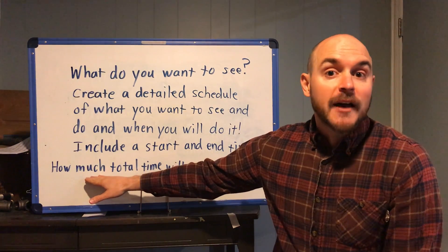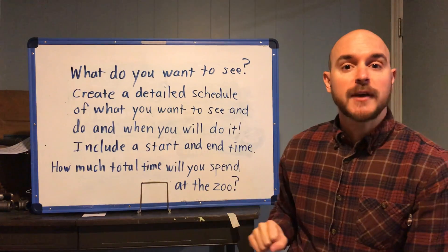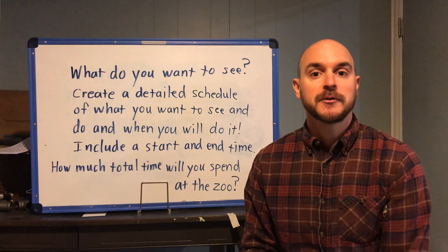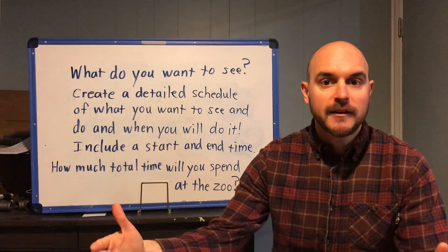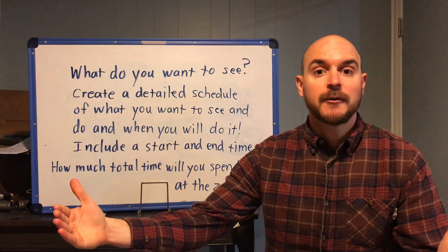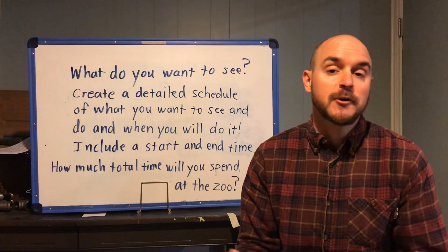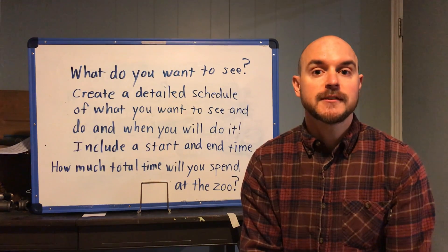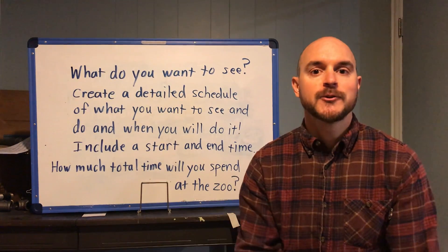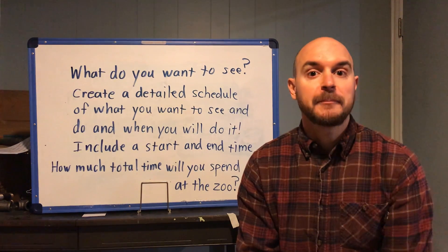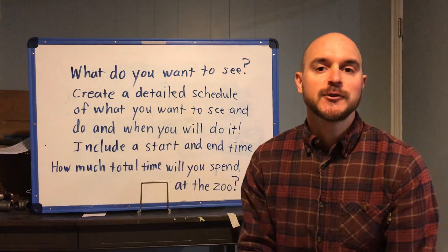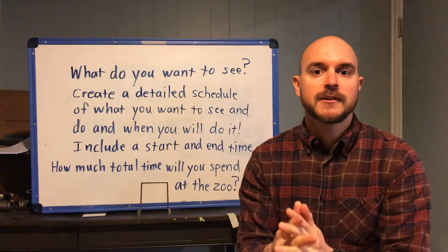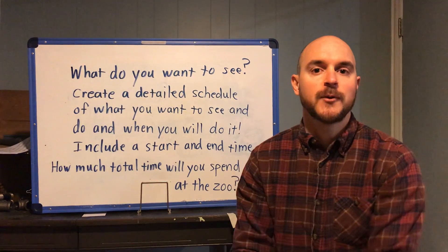Once you have your schedule created, do a final calculation of how much total time you are spending at the zoo from the time you go in to the time you're done for that day. It might be every single hour that the zoo is open — that's perfectly fine — but maybe you'll plan your day and realize you're leaving a little bit earlier than the zoo closes. The goal is simply how much total time will you spend there. You'll know that because you can look at that detailed schedule, each item showing when you're starting and when you're stopping.